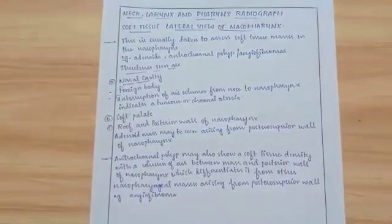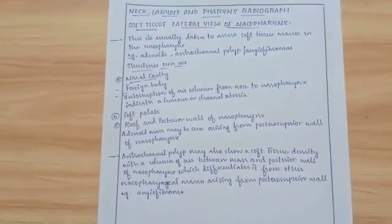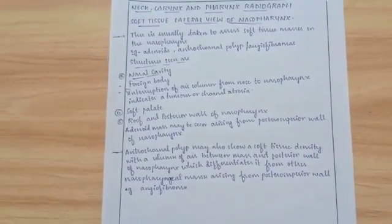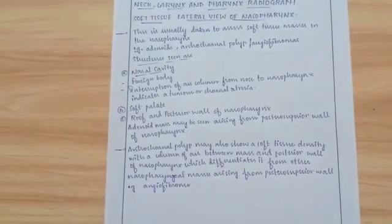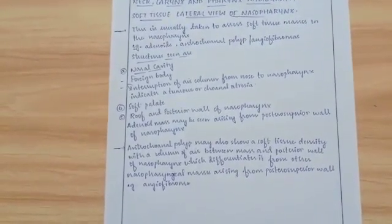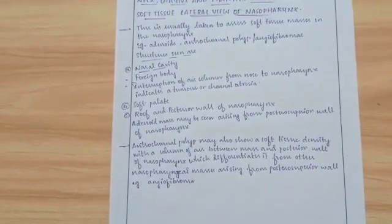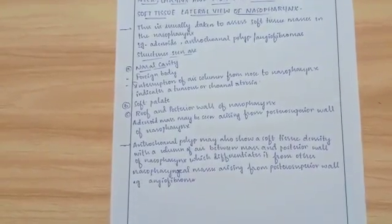Neck, larynx and pharynx radiograph. Soft tissue lateral view of nasopharynx. This is usually taken to assess soft tissue masses in the nasopharynx such as adenoids, antrochoanal polyp, and angiofibromas.